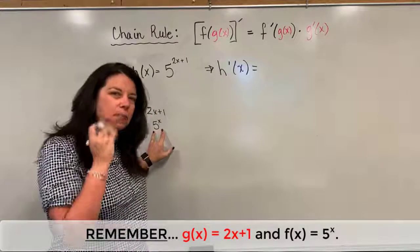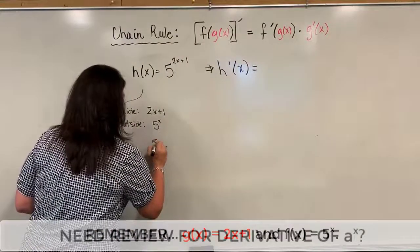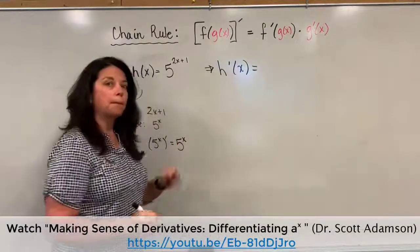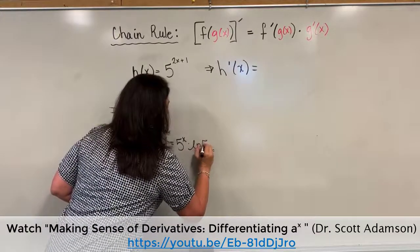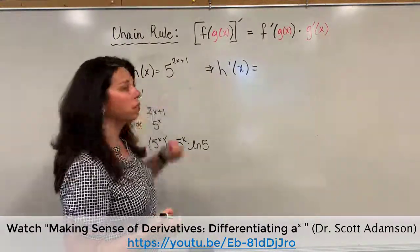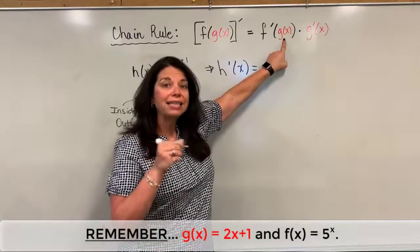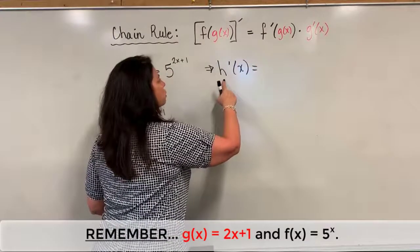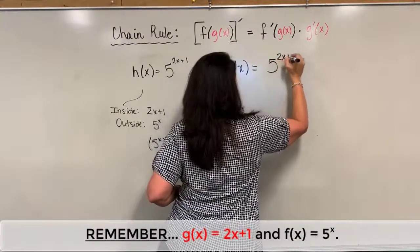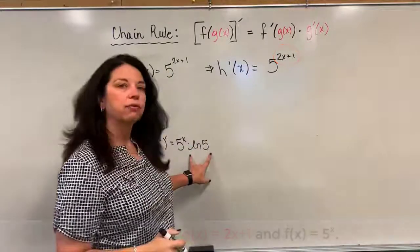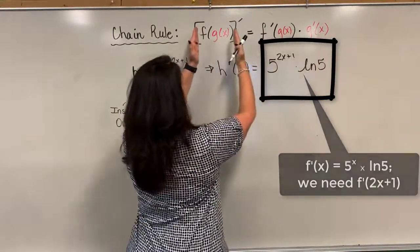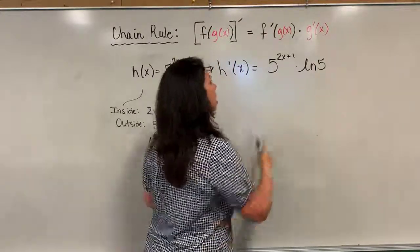The derivative of five to the x, according to the exponential rule, is five to the x again times the natural logarithm of the base — so five to the x times the natural log of five. When I come over here to take this derivative, keep in mind per the chain rule process, I need to keep the inside function intact. So I'm finding the derivative of h of x starting with the outside function: I have five to the power two x plus one — I kept the inside function intact — but I can't forget to also multiply by the natural logarithm of five. That part is just the derivative of the outside function keeping the inside function intact.